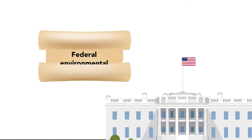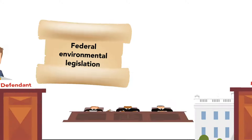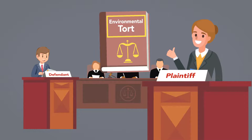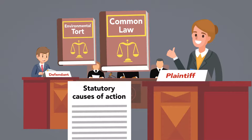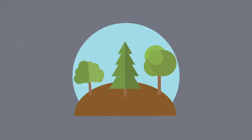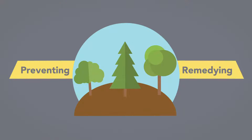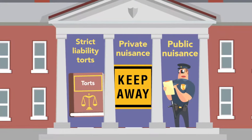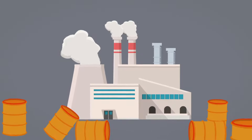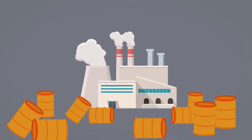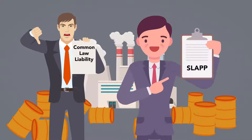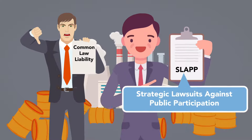In the remaining modules, we'll look more at federal regulations and the effects of federal environmental legislation. We will begin by discussing the reasons that many plaintiffs prefer to pursue environmental torts under the common law rather than statutory causes of action. Next, we'll discuss the possibilities of preventing or remedying environmental harm using trespass, private nuisance, public nuisance, and strict liability torts. The module closes with a discussion of the lengths that some polluters go to in order to avoid common law liability by engaging in strategic lawsuits against public participation, or SLAPP suits.